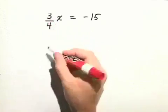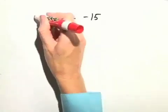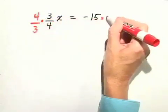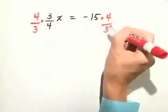The reciprocal of 3 fourths is 4 thirds. So if we take the left hand side and multiply it by 4 thirds, we need to do the same thing to the right hand side.